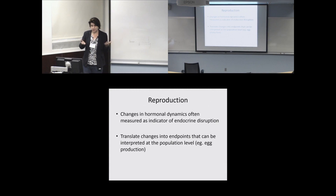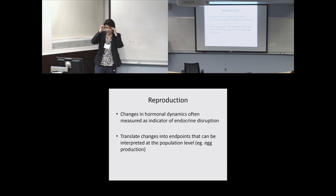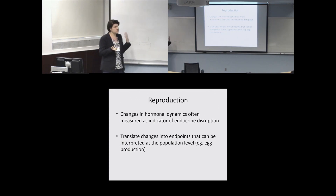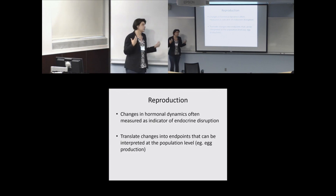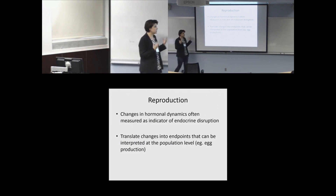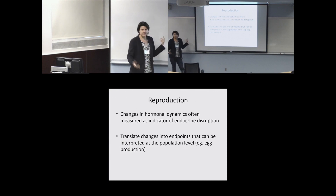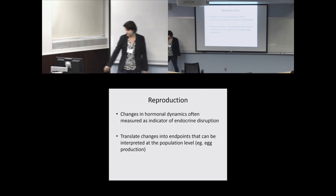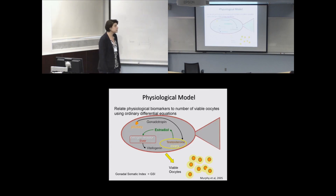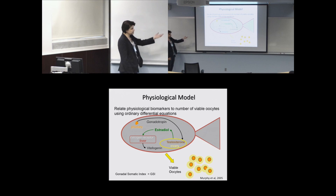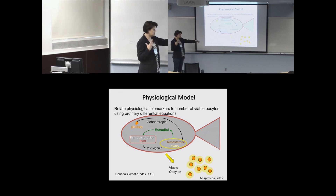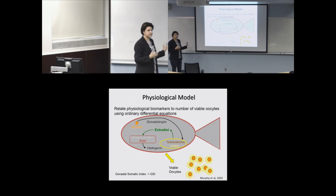Now for the reproduction AOP. Basically we're looking at changes in hormonal dynamics because they're often measured as an indicator of endocrine disruption — we want to translate subtle changes in hormone levels into endpoints that can be interpreted at the population level, such as egg production. We built a really simple physiological model, though Irv has a much better parameterized lake trout model he'll talk about after this.